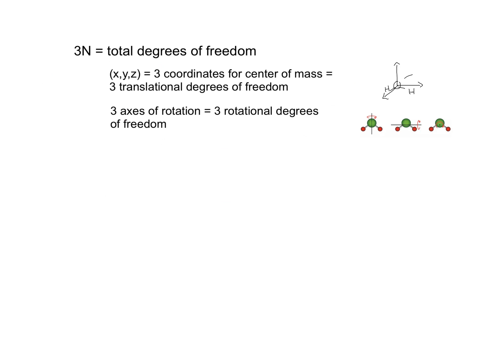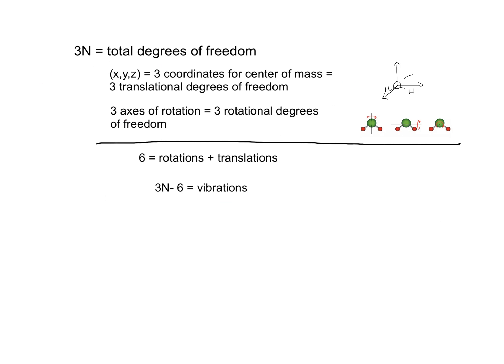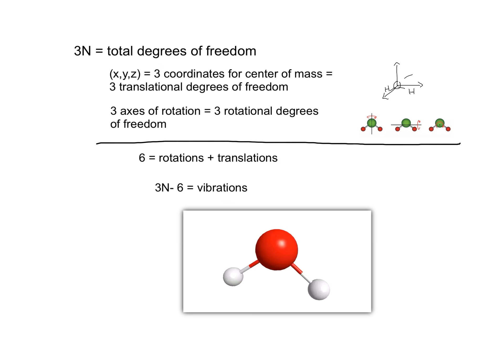This gives us a total of six degrees of freedom that describe rotations and translations. Since there are three N total degrees of freedom, that means there are three N minus six left for vibrations. Since water has three atoms, N equals three, and we expect three different vibrational modes. These three modes are shown here as the asymmetric stretch, the symmetric stretch, and the bending motion.